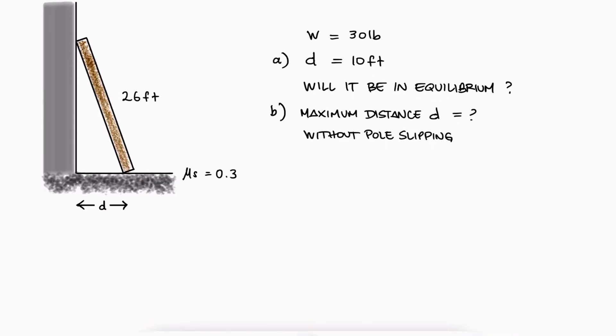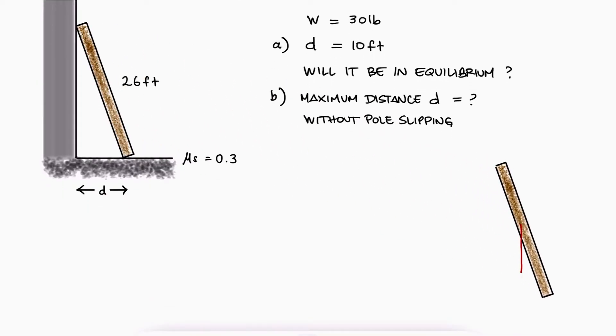For the first question, a free body diagram of the pole would show its weight, two normal reactions, one at the floor and one at the wall, and the friction force preventing the sliding.